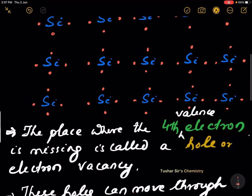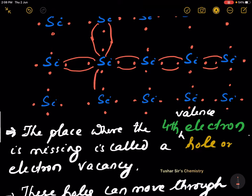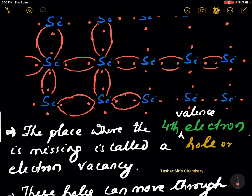You see, they can form a bond like this. This is the silicon crystal.